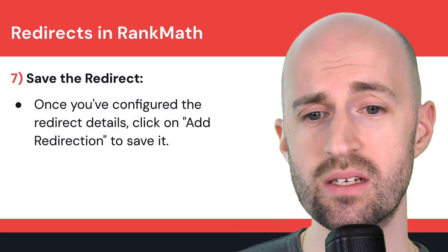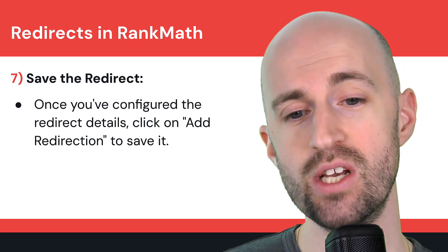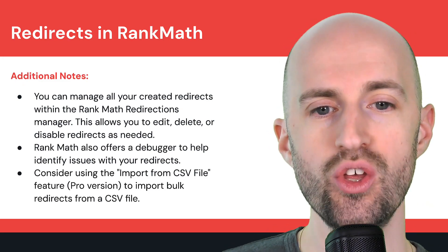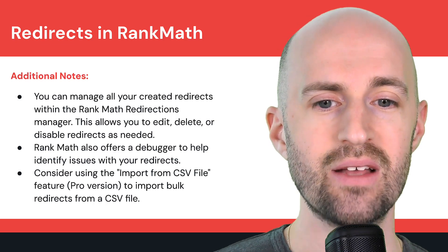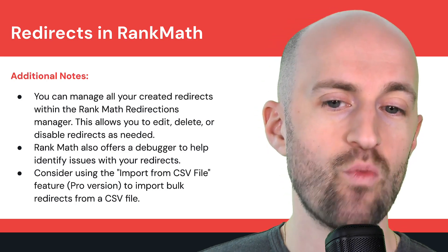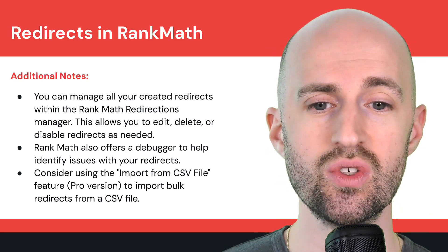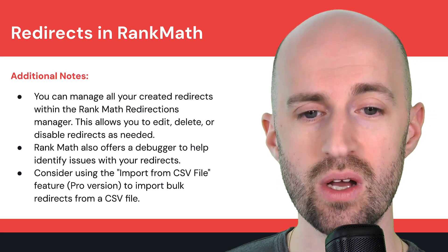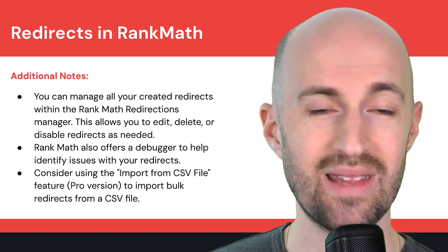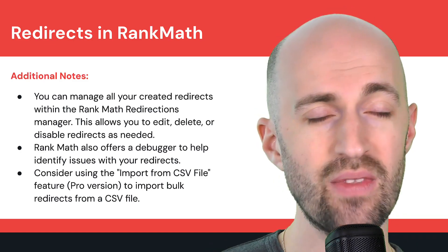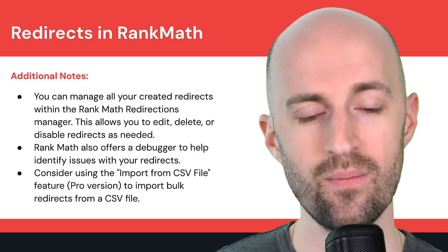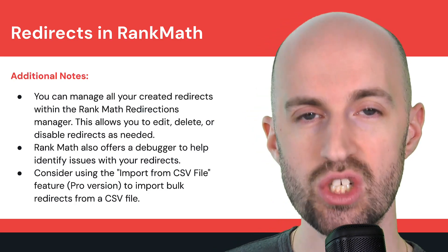Step seven is to save the redirect: once you've configured it, click on Add Redirection to save it and make it active. A few additional notes in Rank Math: you can manage all your created redirects within the Rank Math Redirections Manager, which allows you to create, edit, delete, or disable redirects as needed. Rank Math also offers a debugger to help identify issues with your redirects. You can also use the Import from CSV file feature — available in the pro version — to import bulk redirects, which is useful for large sites or site migrations.